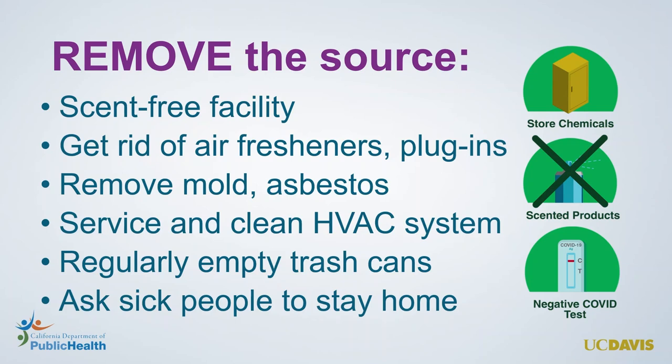Some examples of removing indoor air sources include becoming a scent-free facility by asking occupants not to wear perfume or cologne, and removing plug-in or spray air fresheners and essential oils. We can walk around the building and look for potential sources like mold growth or asbestos damage and properly remove or manage them so pollutants like mold spores and asbestos are no longer getting into the air. Similarly, it is important to periodically service and clean the HVAC system to remove any mold growth, dust, and debris buildup, and other sources of pollutants in our ventilation air.